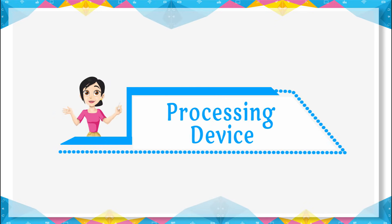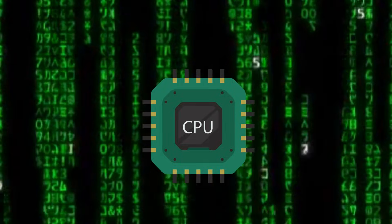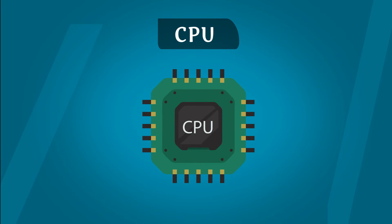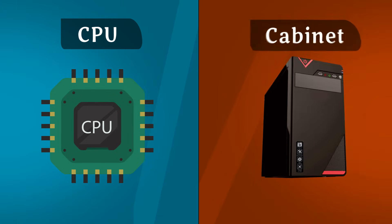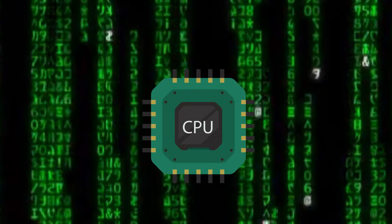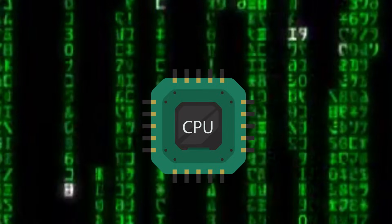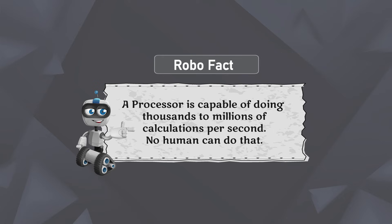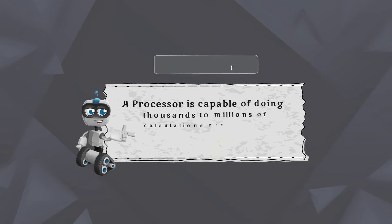Processing device. The device which is used to process the input data is called a processing device. The Central Processing Unit, or CPU, is a processing device of the computer. It is also called the processor. It is present inside the CPU box and processes data and gives it to the output device. A processor is capable of doing thousands to millions of calculations per second — no human can do that.